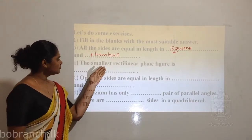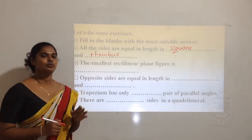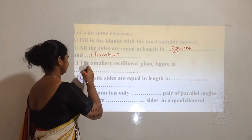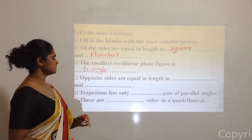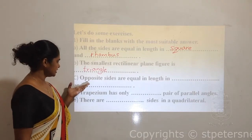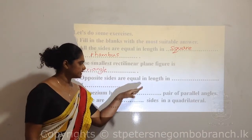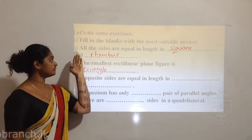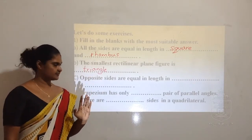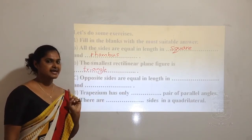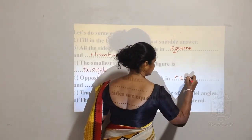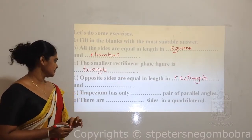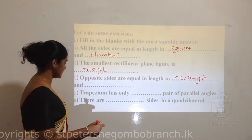The smallest rectilinear plane figure is the triangle. Opposite sides are equal in length in blank and blank. All sides are equal in square and rhombus. What about the opposite sides? Opposite sides are equal in length in rectangle. What can you call the crooked rectangle? The crooked rectangle can be called the parallelogram. So opposite sides are equal in length in rectangle and the parallelogram.